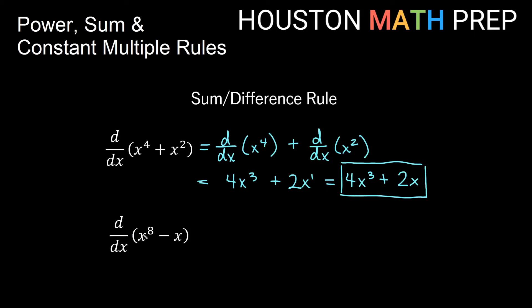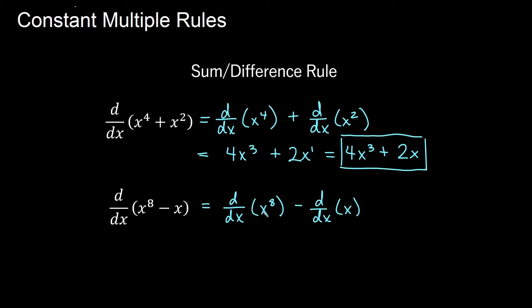For the derivative of x to the eighth minus x: take each term separately. The derivative of x to the eighth gives 8x to the seventh. For the minus x term, x is really x to the one, so the one comes out front and we get x to the zero, which equals one. So the derivative of x is just one, giving us 8x to the seventh minus one.